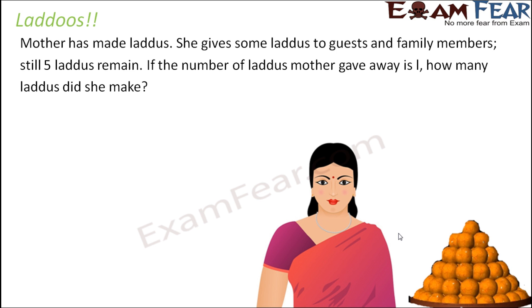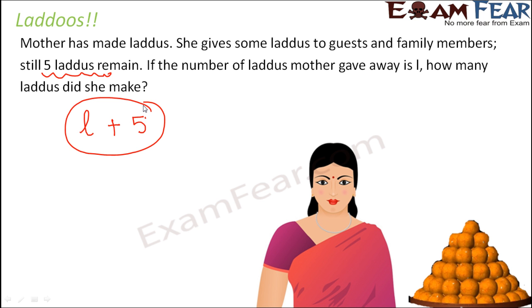Let's assume your mother made Ladoos and gave some to guests and family members. She gave away L number of Ladoos, and still five Ladoos remain. If the number of Ladoos mother gave away is L, how many Ladoos did she make? We don't know the exact number she prepared, but we know she gave away L Ladoos. Since five Ladoos are still with her, the total she prepared is the number she gave away plus the number remaining — that is L plus 5.